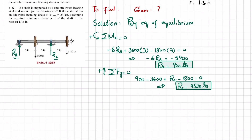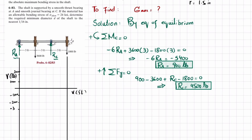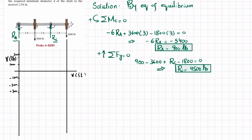Now we have the reaction forces at A and C, so we can draw the shear force and bending moment diagrams to find the maximum bending stress. I will draw vertical lines at the ends of the beam, and for shear force the horizontal axis is in feet. Each division is 1000 pounds, so we have 2000, and on the negative side minus 1000, minus 2000, minus 3000.